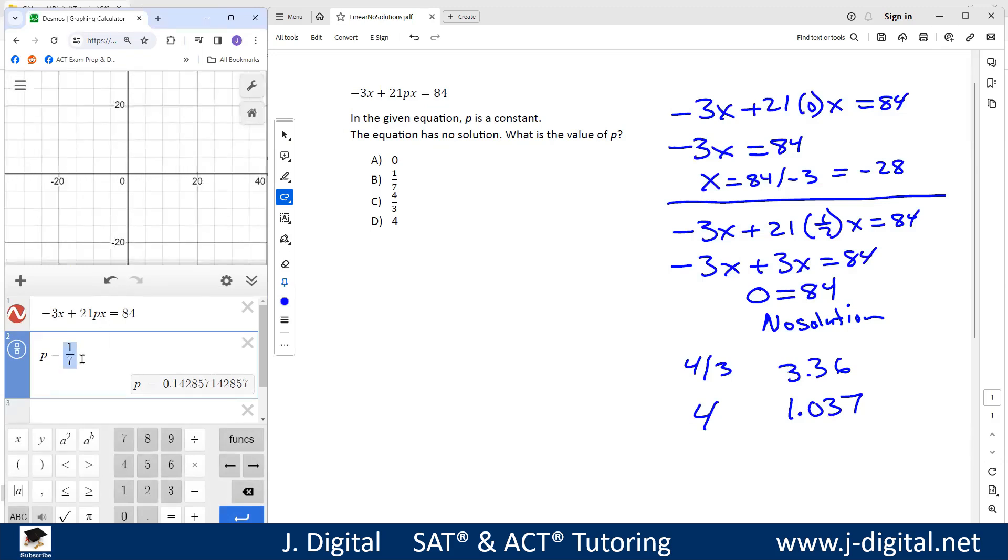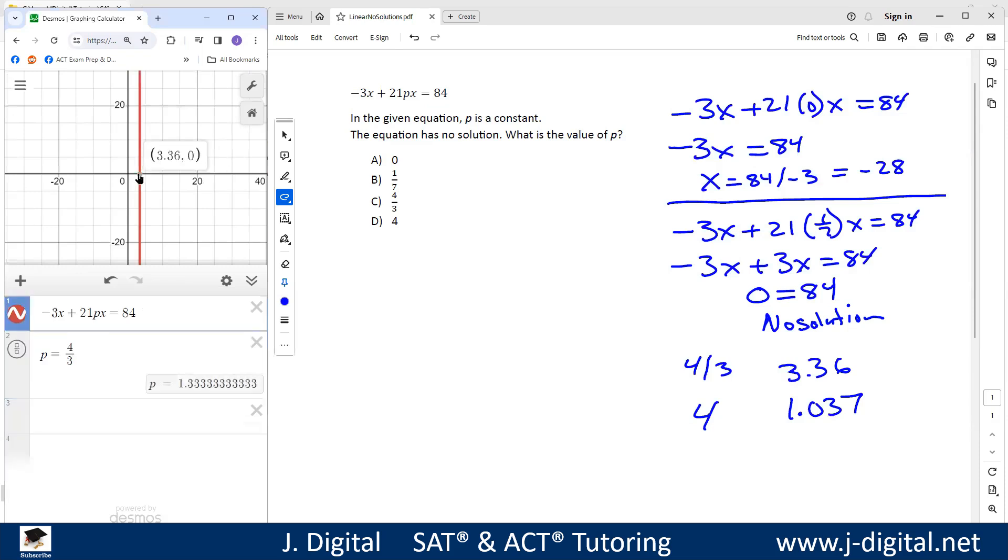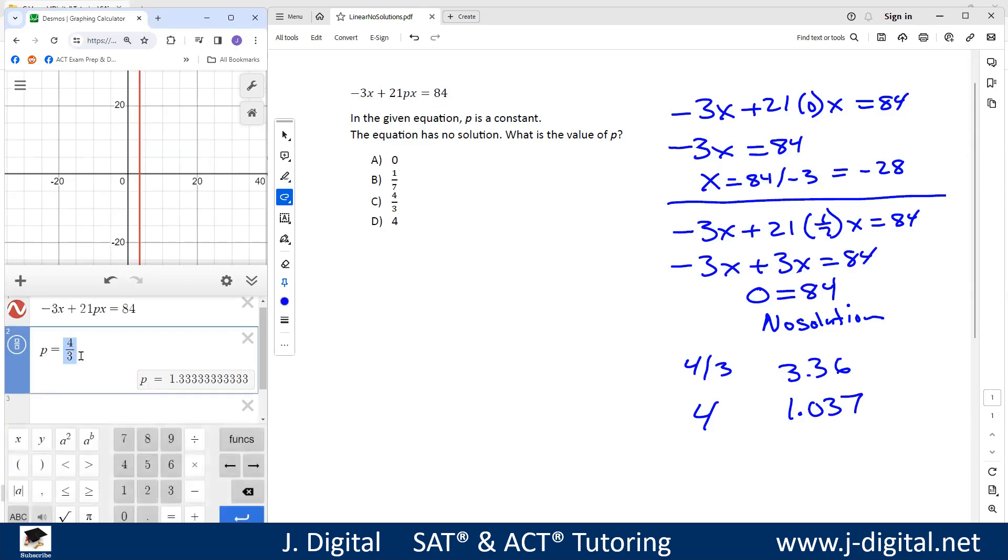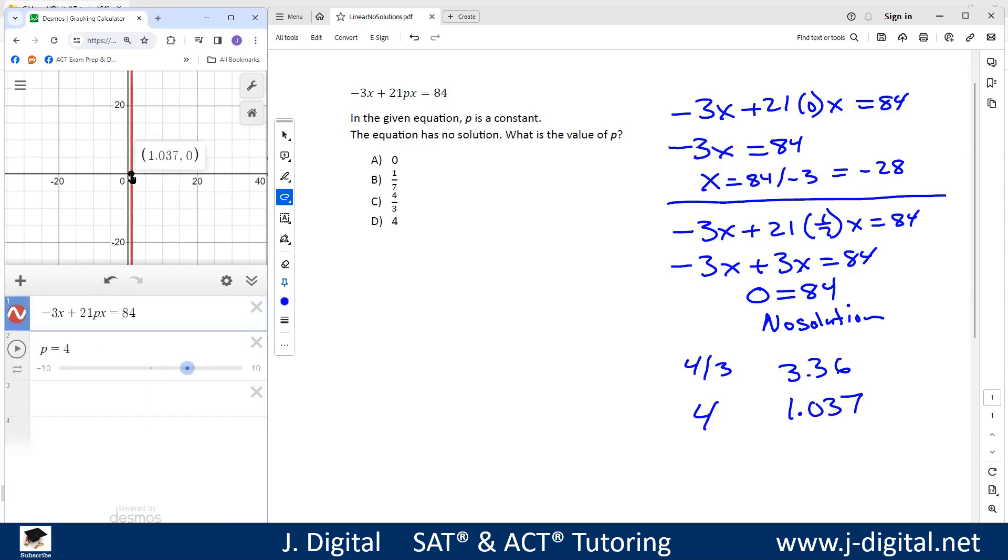If we try the 4/3, we have a solution here, and that's at 3.36. We set p to 4 and we got a value at 1.037. So 1/7 is the one that doesn't give us a solution.